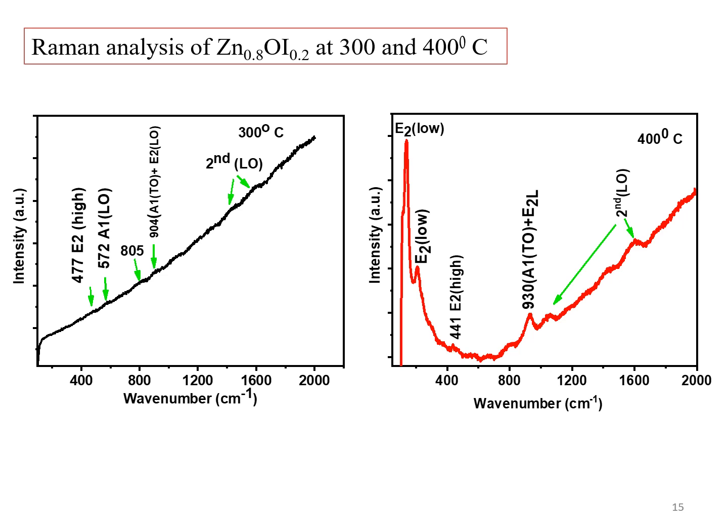The low intensities of the second-order Raman mode could be due to the existing potassium iodide phase.